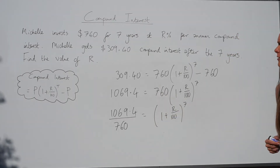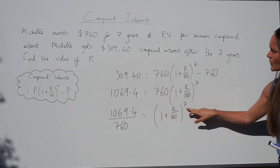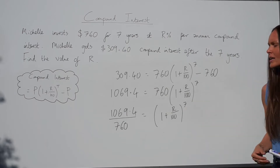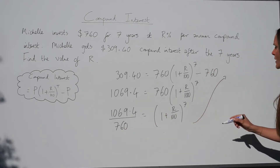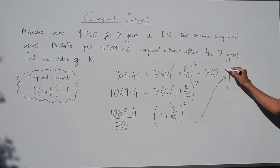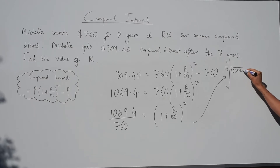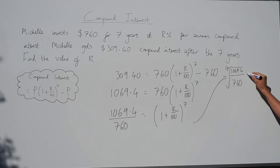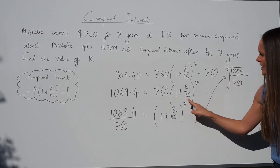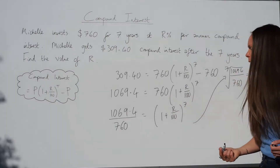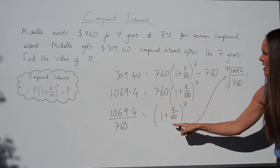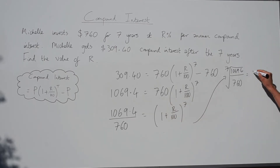Now we have (1 + r/100)⁷ on the right. The opposite of raising something to the power of 7 is finding the seventh root. So take the seventh root of the fraction 1069.4/760 on the left-hand side. On the right-hand side the power of 7 cancels, leaving just (1 + r/100).